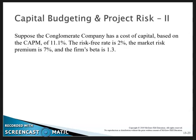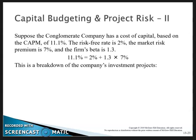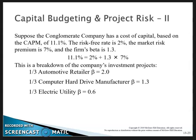Consider a conglomerate company with a cost of capital based on the CAPM of 11.1%. The risk-free rate is 2%, the market risk premium is 7%, and the firm's beta is 1.3. So: 11.1% equals 2% plus 1.3 multiplied by 7%. The company has the following investment projects — one-third in an automotive retailer with beta 2, one-third in a computer hard drive manufacturer with beta 1.3, and one-third in an electric utility.